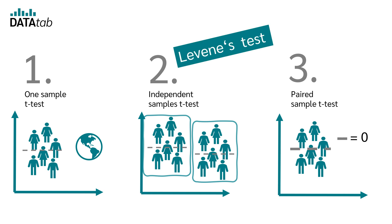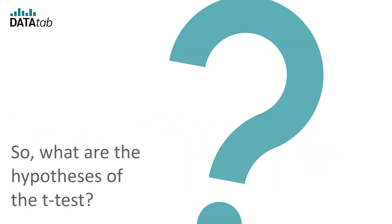In the case of an independent t-test, the variances in the two groups must be approximately equal. You can check whether the variances are equal using Levene's test. For more information, watch the video on Levene's test.